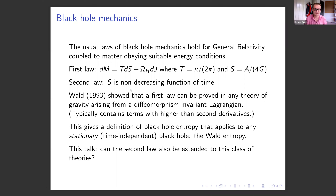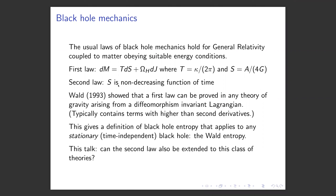About 30 years ago, Wald showed that the first law of black hole mechanics can be extended to a much larger class of theories. He showed that a first law can be proved for any theory of gravity arising from a diffeomorphism-invariant Lagrangian. This includes theories with higher derivative terms such as polynomials in the Riemann tensor or its derivatives. Wald defines an entropy for any stationary black hole — this is the famous Wald entropy.